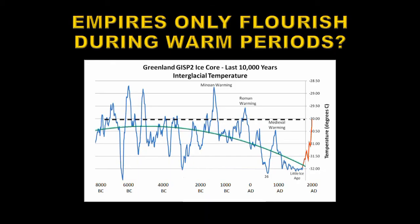Let's return to our original graph, remembering now that the blue curve is from a single site in Greenland and the red curve is a global measurement of temperature. We know that global temperatures include sea surface temperatures, which are not going up as fast as the land, and also we know that sites such as this one in Greenland are warming a lot faster than the rest of the planet. So to truly compare these two, you'd probably have to increase the amplitude of that red curve by at least a factor of two to make it equivalent to the blue curve. And that would put it at equal to or greater than any temperature in the last 10,000 years.